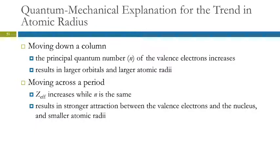Quantum mechanics explains the trend. As we move down a column, atoms get larger because the principal quantum number of the valence electrons is increasing — they are in orbitals that have a larger radius, so the atom is larger. Moving across a period, the effective nuclear charge is increasing but the principal quantum level stays the same, so the electrons are pulled in and we get smaller atomic radii.